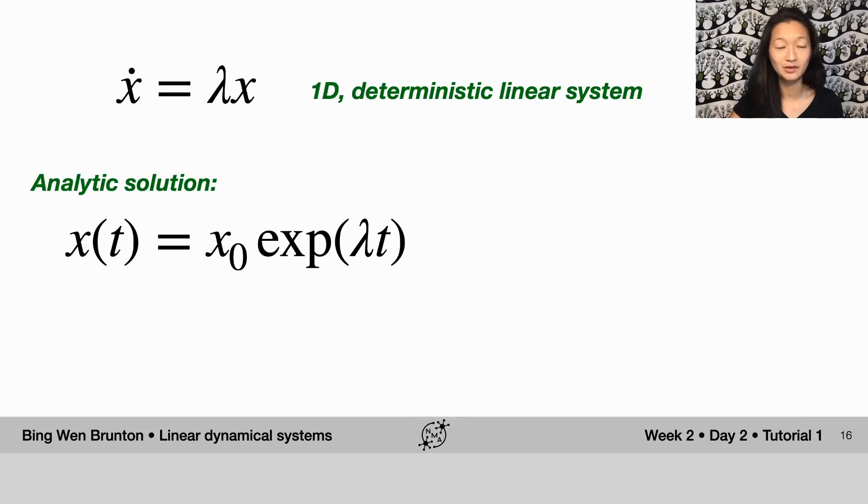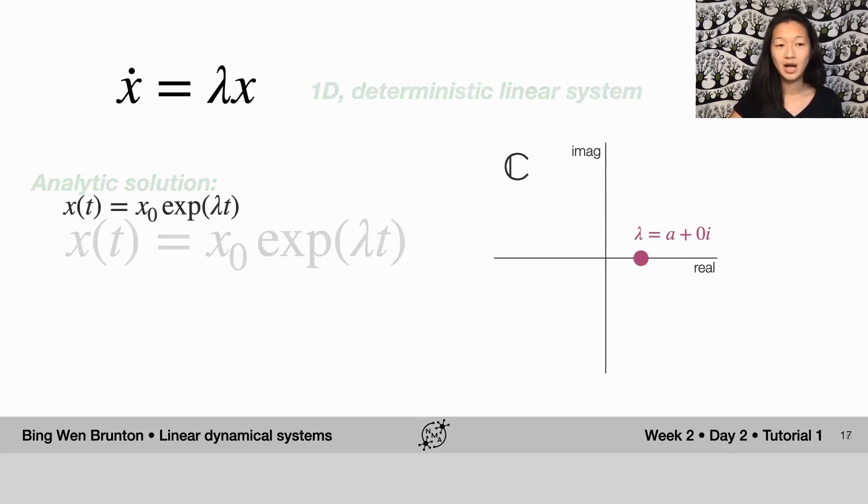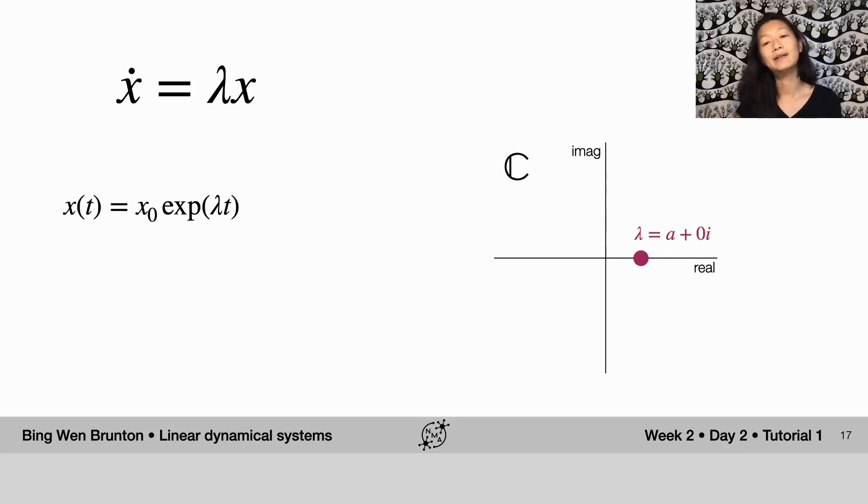Fortunately the analytic solution is exactly the same: it is still something that scales as e to the lambda t. But when lambda is not only a real valued number but has a complex component, we can look at it on the complex value plane where everything on the horizontal is the real component, this a component, and on the vertical axis we're going to plot its imaginary component, something that scales with i where i is the square root of negative one.